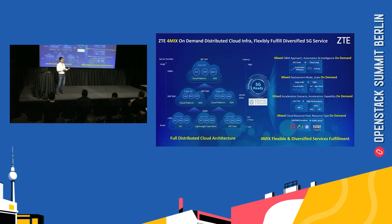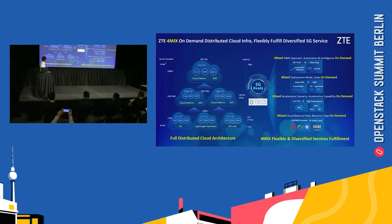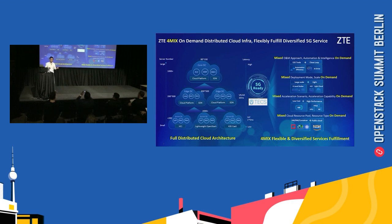Second is deployment on demand. You can install a full set of cloud platform, but also you can install a lightweight OpenStack, or even a compute-storage OpenStack merged in one node. This flexible deployment mode on demand depends on what kind of location, data center, or service you would like to deploy.